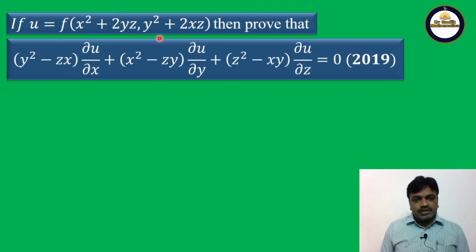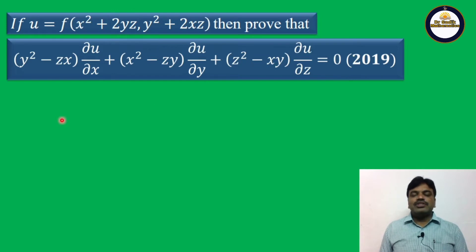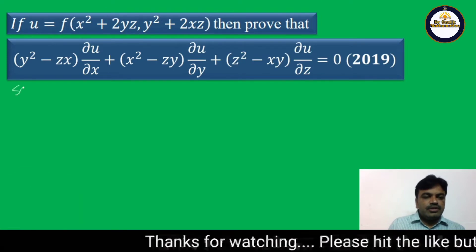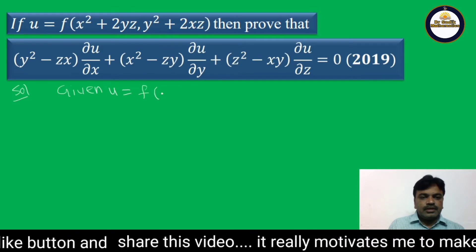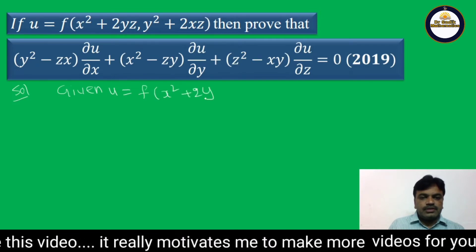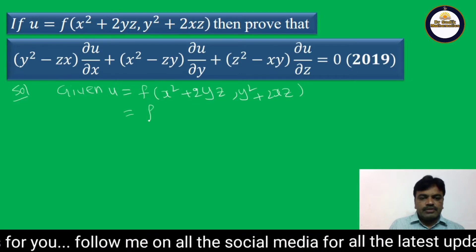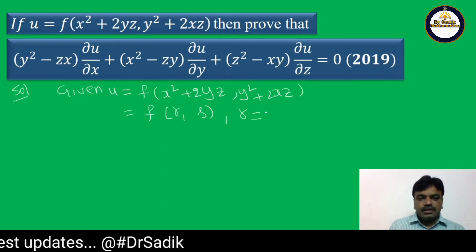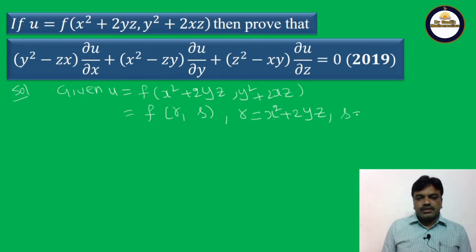So u is equal to f of r comma s. Now I compare these two. What is r? r is x square plus 2yz. What is s? s is y square plus 2xz.